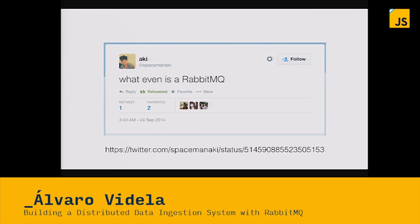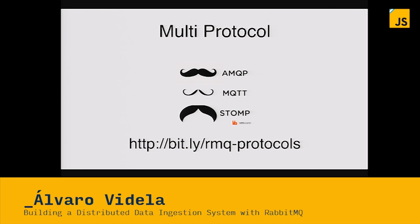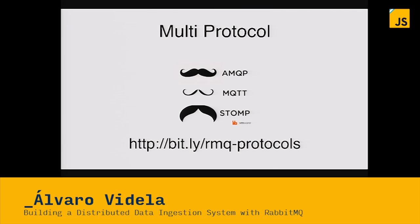There's an actual tweet: 'What even is a RabbitMQ?' So Rabbit is a multi-protocol messaging server. It supports AMQP by default. Basically, the big banks in the States created the AMQP protocol as a way to spend less money — not sure how that succeeded considering the 2008 crisis. Rabbit also supports MQTT, which is a protocol for the Internet of Things. It's used, for example, by the Facebook iOS chat.